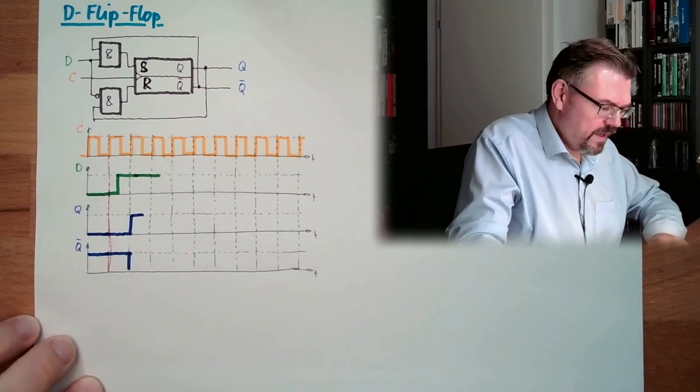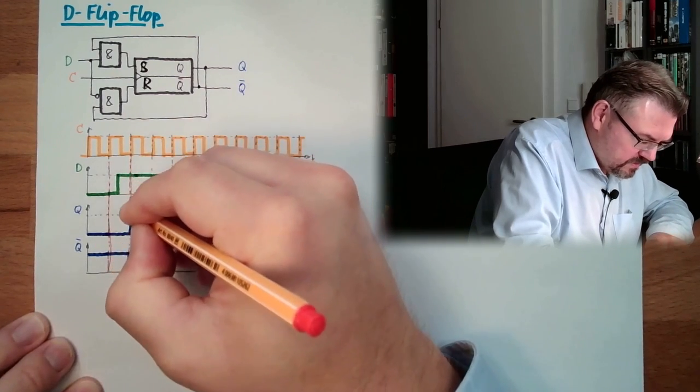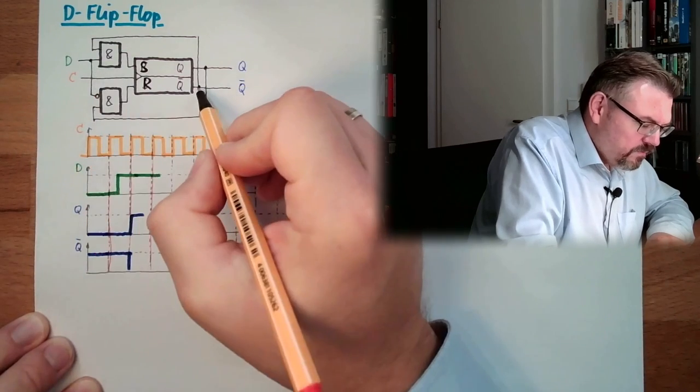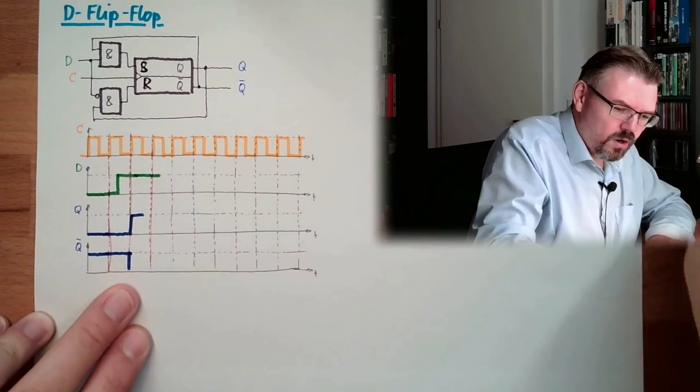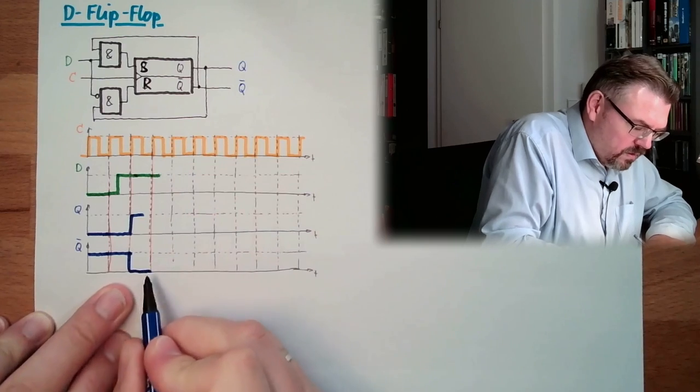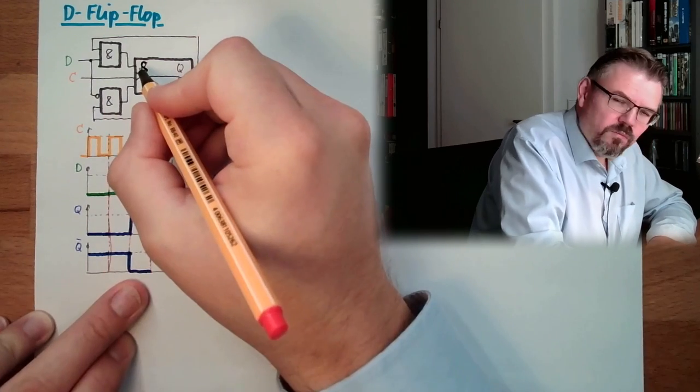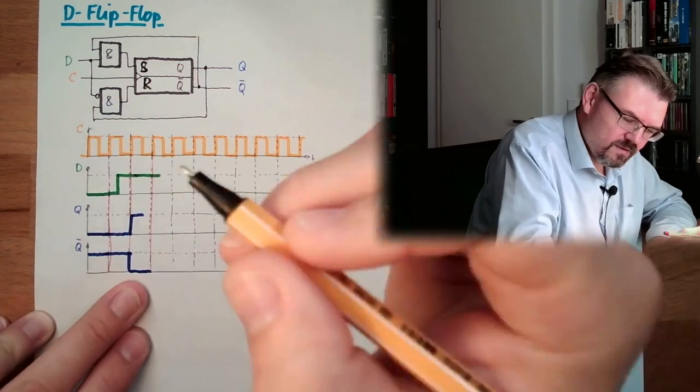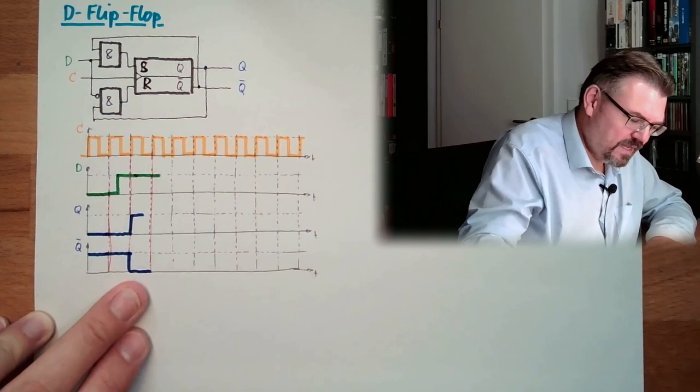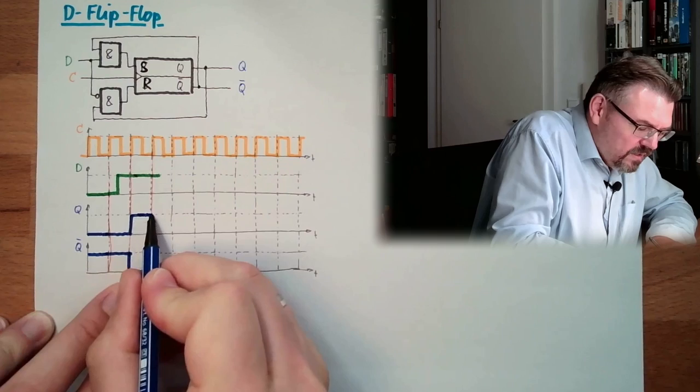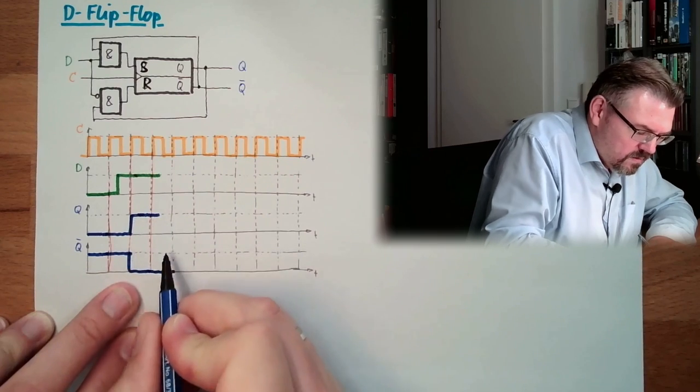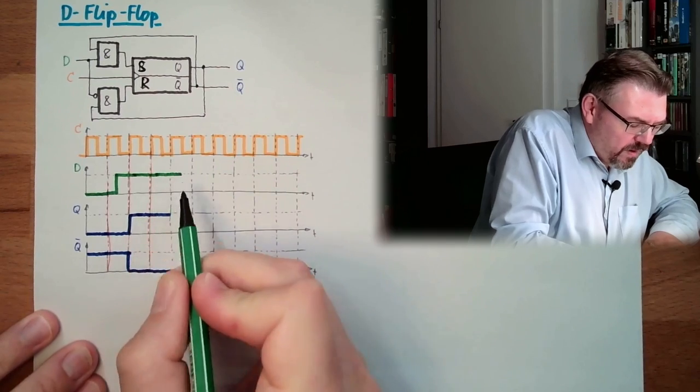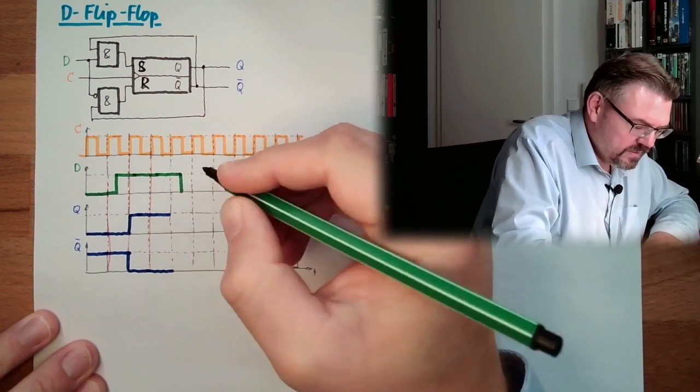What is happening at the next rising edge? D is still one. This Q is not one. Here we are not one, we are zero. So there will not be a S, there will not be an R. Because D is one and this is not. So it will stay the same. So as long D is here, we will stay the same. And then at one point in time, D will disappear.